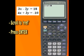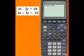Scroll to RREF, which stands for Row Reduced Echelon Form. We'll reduce matrix A and close the parentheses.